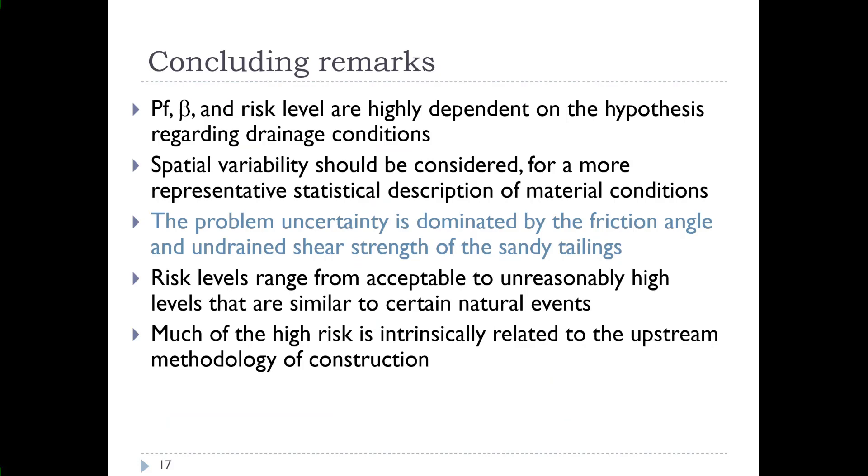So in terms of concluding remarks, we'll just summarize that probability of failure and risk levels are highly dependent upon the hypotheses regarding drainage conditions. Spatial variability should be considered for a more representative statistical distribution of the material conditions. In other words, we should account for potential spatial variability. And the problem uncertainty is dominated by the friction angle and undrained shear strength of the sandy tailings. So that's your critical parameter that has the ability to very much influence the analysis. Risk levels range from acceptable to unreasonably high levels that are similar to certain natural events. And much of the high risk is intrinsically related to the upstream method of construction, which is fairly obvious here.